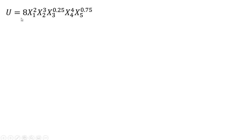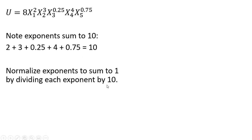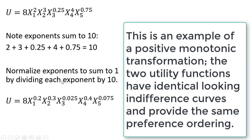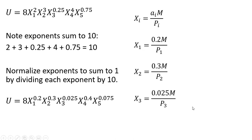Now if we had a utility function where the exponents do not sum to one — say they sum to ten — we can still apply this method by first normalizing the exponents. To normalize, divide each exponent by the total sum of ten: so 2/10 = 0.2, 3/10 = 0.3, 2.5/10 = 0.25, and so on. Now all exponents sum to one and we can easily obtain the utility-maximizing demand values for good one, good two, good three, and so on.